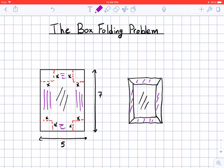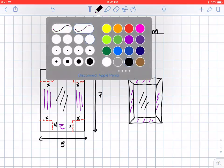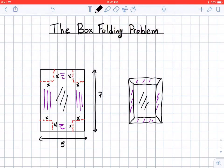What I would like to do is make these cuts so that the box I get in the end has maximum volume. So in order to do that I'm going to actually figure out a formula for the volume that depends on the size of these cuts.